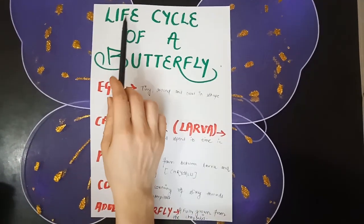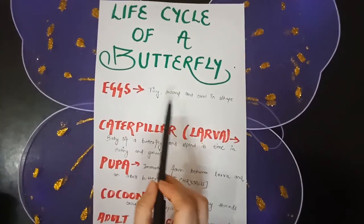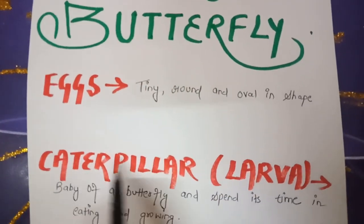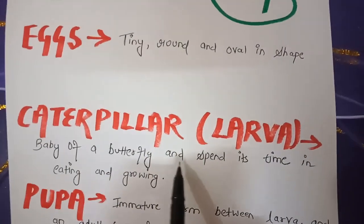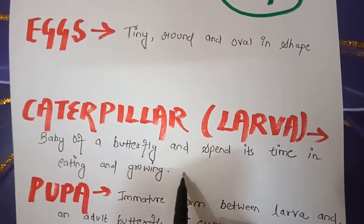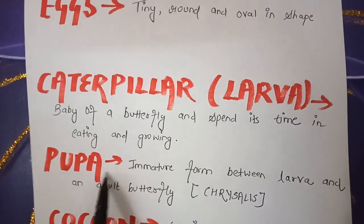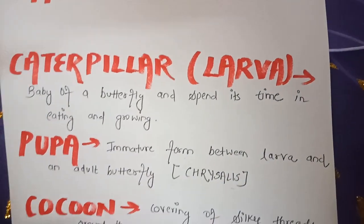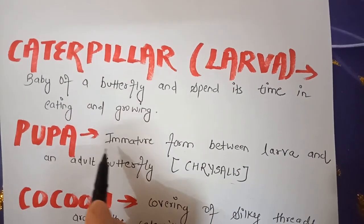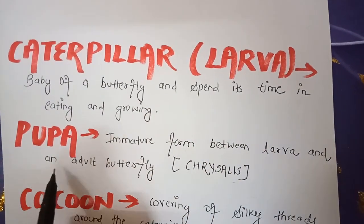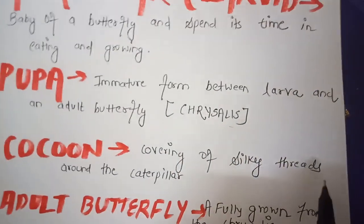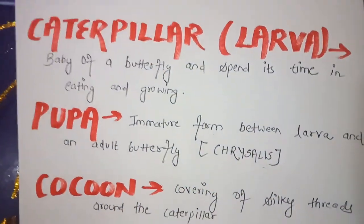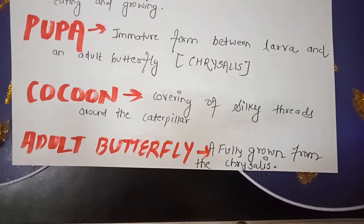Here are some important terms related to the life cycle of a butterfly. Eggs — tiny, round and oval in shape; they may vary in size, colors and shapes. Caterpillar or larva — the baby of a butterfly; it spends its time eating and growing, and also sheds its skin 4 to 5 times. Pupa — the immature form between larva and adult butterfly, also known as chrysalis; it is an ongoing process between larva and adult butterfly. Cocoon — covering of silky threads around the caterpillar. Adult butterfly — a fully grown butterfly from the chrysalis.